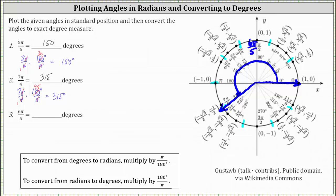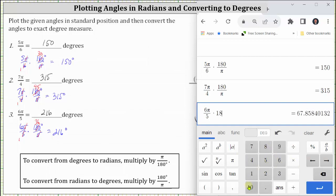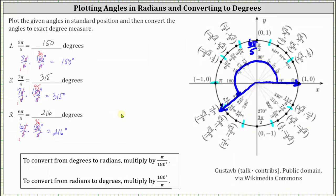Converting to degrees, we multiply six pi divided by five by 180 degrees divided by pi. Simplifying before multiplying: pi divided by pi simplifies to one; five and 180 share a common factor of five, giving one-fifth and 36. This leaves us with six times 36 degrees, which is 216 degrees. Checking on the calculator, we do get 216 degrees. I hope you found this helpful.